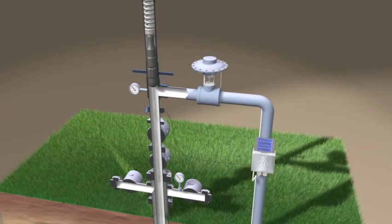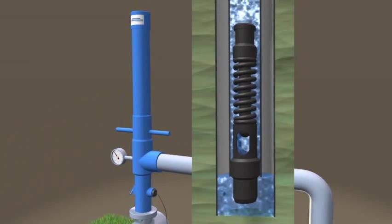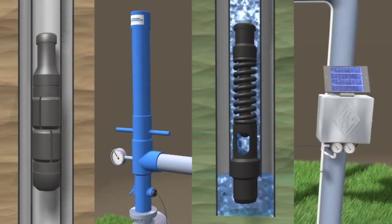So what exactly is the plunger lift system? A typical system consists of a lubricator catcher assembly, a downhole bumper assembly and bumper spring, the plunger, and an electronic controller and motor valve.